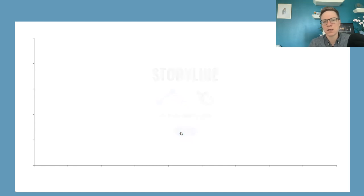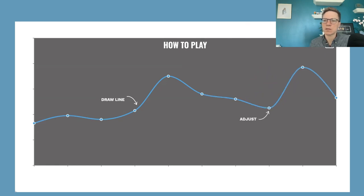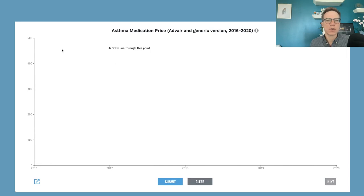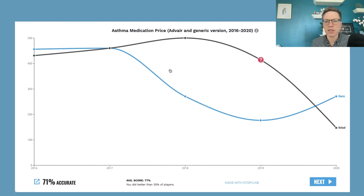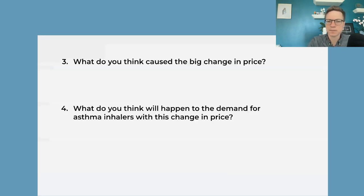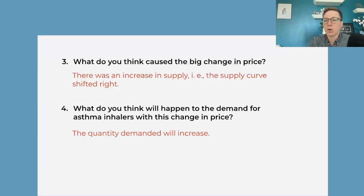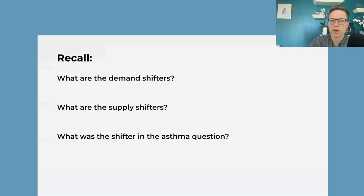How the storyline game works: you're drawing a line — you guess what happens to the price and then submit, and it shows you what happened to that price. We can see this price goes down after those competitors come in for the asthma inhaler.